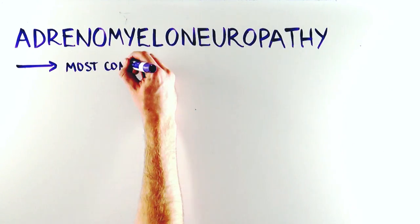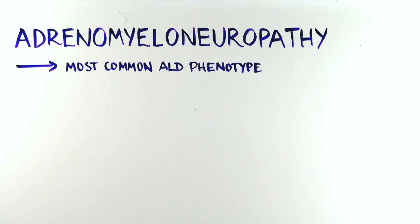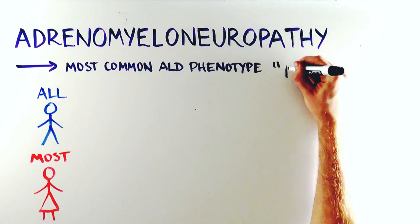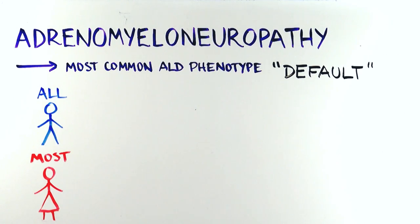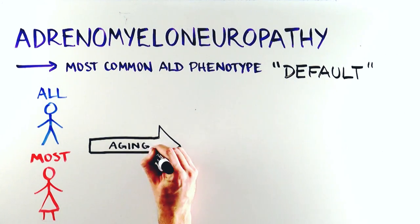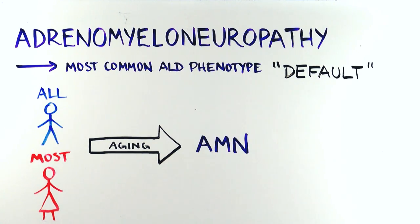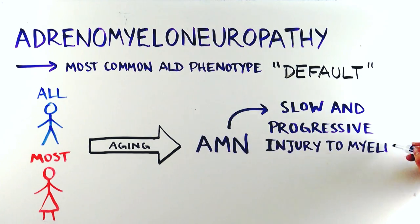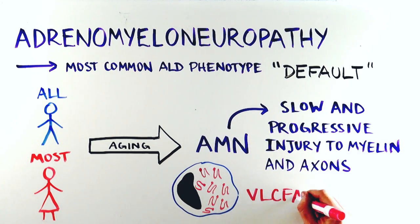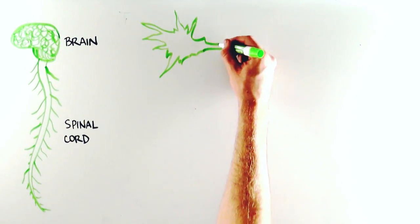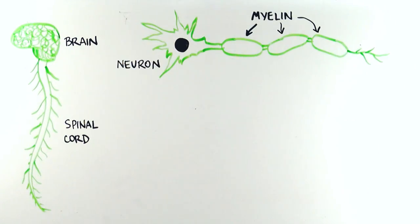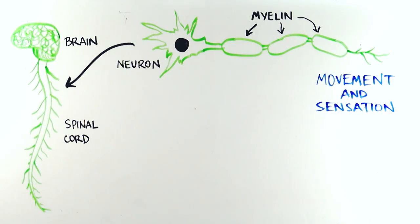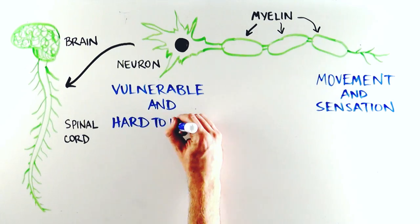Adrenomyeloneuropathy, or AMN, is the most common ALD phenotype. It affects all men and most women by the time they reach their late 40s. In this sense, it is considered the default form of ALD — whether you are a man or a woman with ALD, if you live long enough, you will eventually develop AMN. AMN results from slow and progressive injury to the myelin and axons of the spinal cord and nerves because of VLCFA accumulation. Myelin serves as a sheath to protect and insulate the axons of neurons in the spinal cord responsible for movement and sensation, which are among the largest and longest cells in the body, leaving them vulnerable and harder for the body to repair.